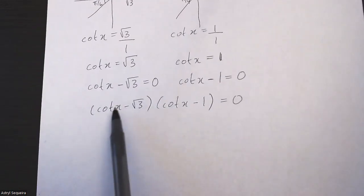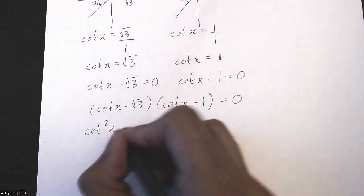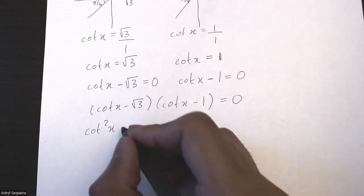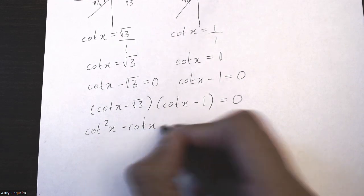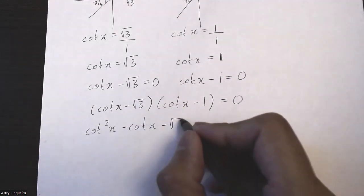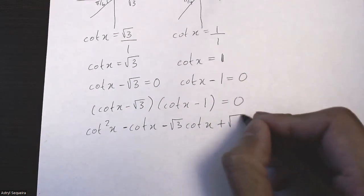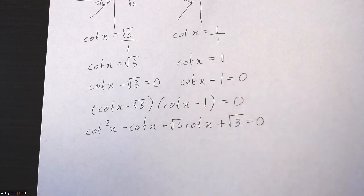I just have to expand this. Cot times cot is cot² x, cot times -1 is -cot x, cot times -√3 is -√3 cot x, and -√3 times -1 is +√3.